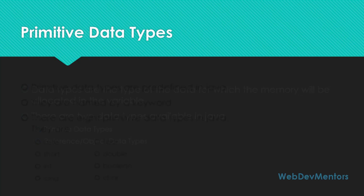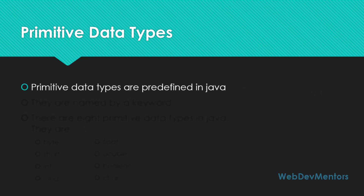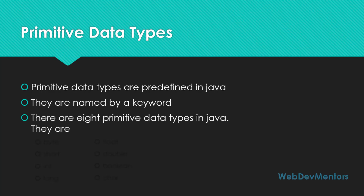Primitive data types are predefined in Java. When Java was created, a set of data types was predefined — they are not user-defined data types, so you are not going to create any data types; they're already there in Java. They are named by a keyword, so if you want to create a variable with that data type, you have to give that keyword name. There are eight primitive data types in Java.